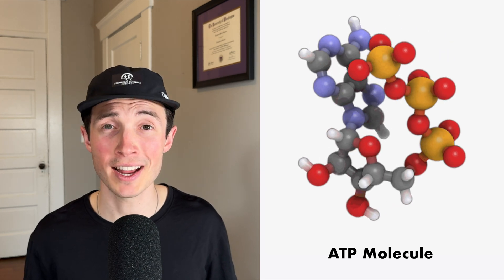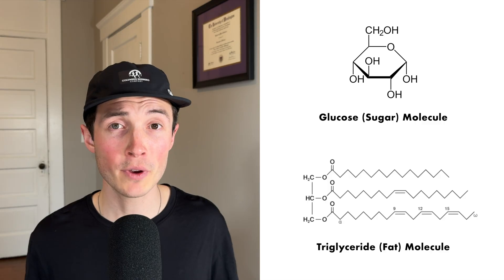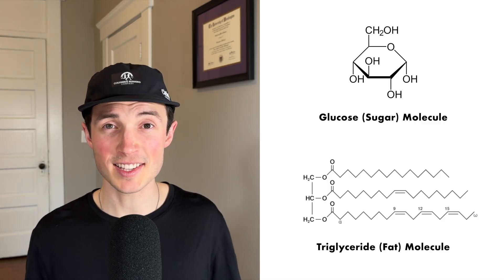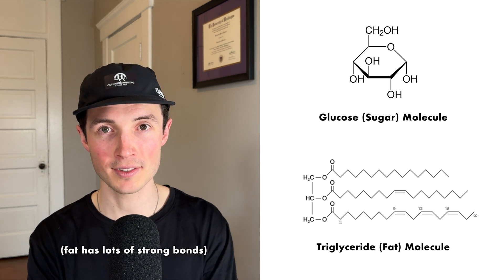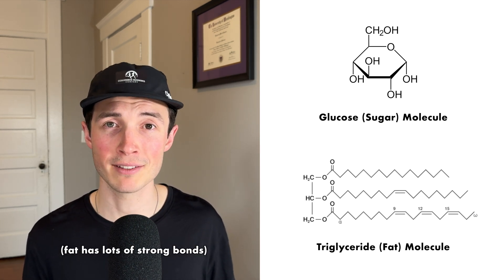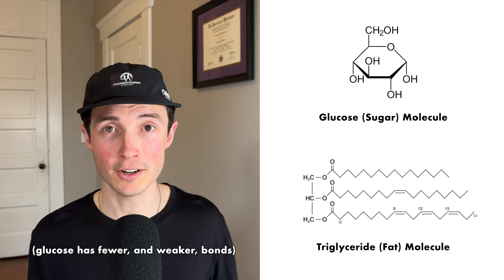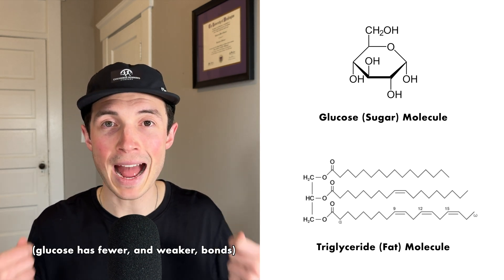Let's start with some simple definitions. In order for our muscles to contract, they need energy in the form of ATP, which stands for adenosine triphosphate. Depending on the intensity of the exercise we're doing, our body uses different fuel sources and systems to generate the ATP for muscle contraction. Our two main fuel sources are glucose and fat. Fat is a very energy dense fuel source, but it burns relatively slowly. Glucose is not as energy dense, but it is a super fast fuel.